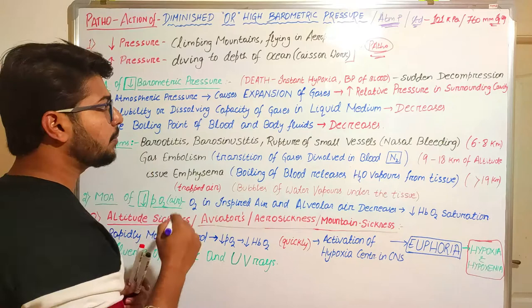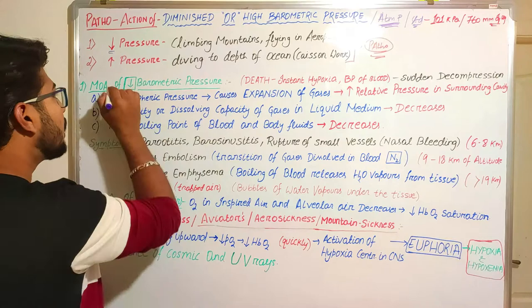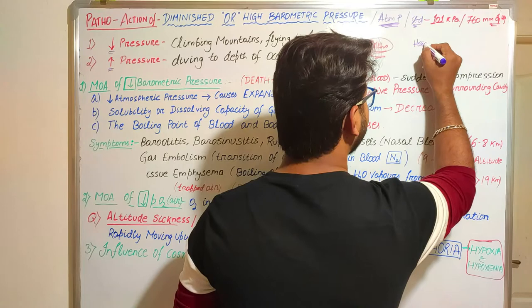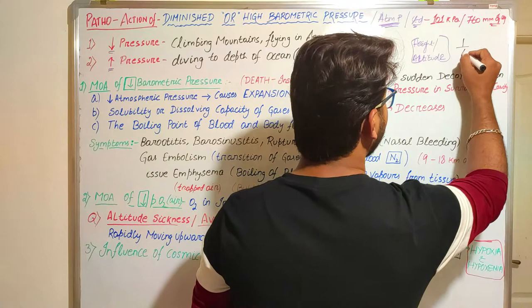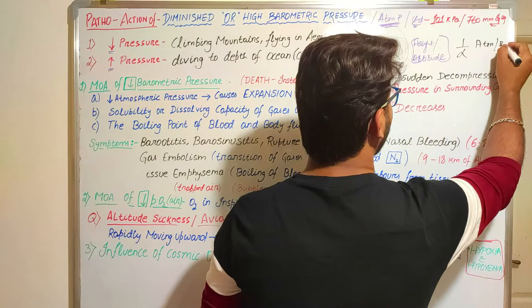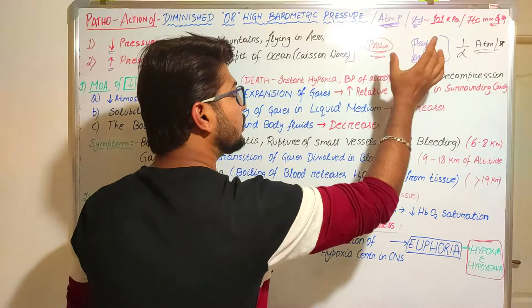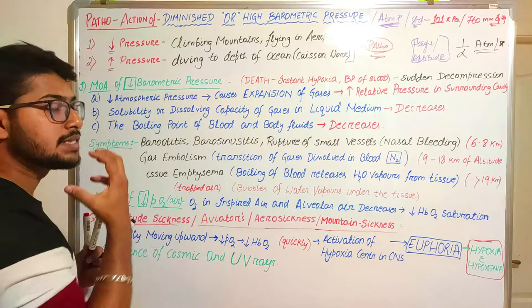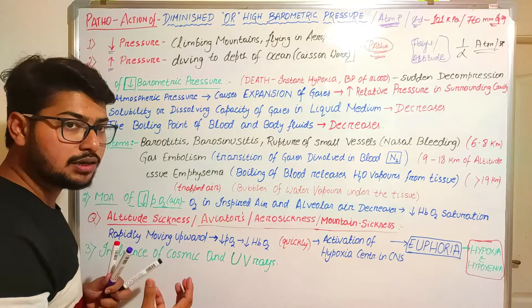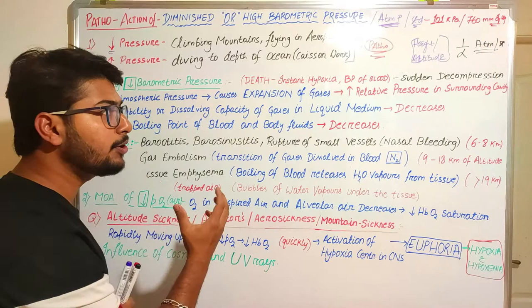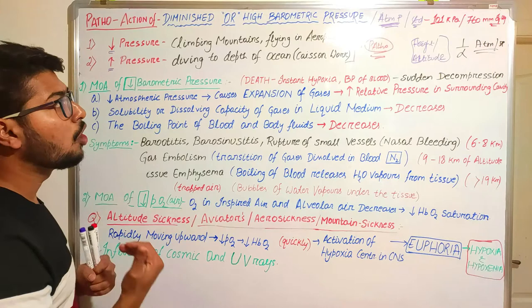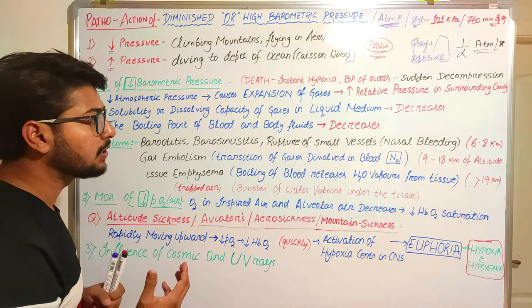One thing to remember is that this change in barometric pressure — whether it decreases or increases — depends on height or altitude, and it is inversely proportional to atmospheric pressure. If we move up towards the mountains, the pressure decreases; when we move towards the depth of the ocean or sea, the atmospheric pressure increases. According to these changes in environmental conditions, we will have different mechanisms leading to different kinds of pathology.